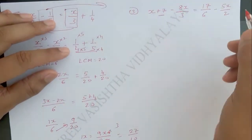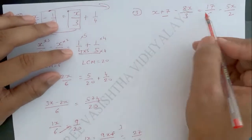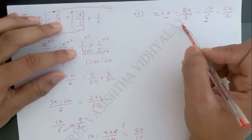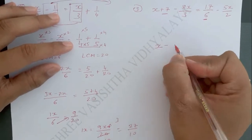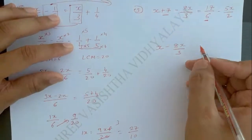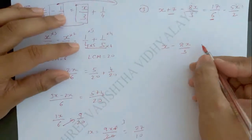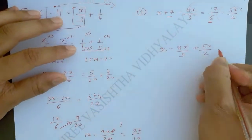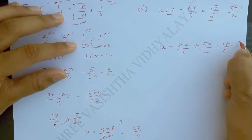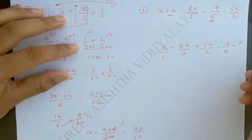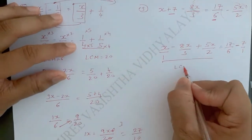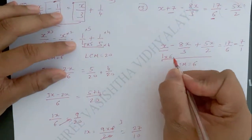Now see, this one is constant and these two are constant. So we will transpose these two numbers to the RHS side, and 5x by 2, 8x by 3, and x will be on the LHS side. So x minus 8x by 3 — there will be no change in sign because it is on the LHS side. Now this minus 5x by 2 is transposing to the LHS side, so it will become plus 5x by 2, equal to 17 upon 6. And this plus 7 is going to transpose to the RHS side, so it will become minus 7. Now below x take denominator as 1, and below 7 take denominator as 1. Here see 1, 3, and 2 — the LCM for these numbers will be 6. So we are going to multiply by 6.